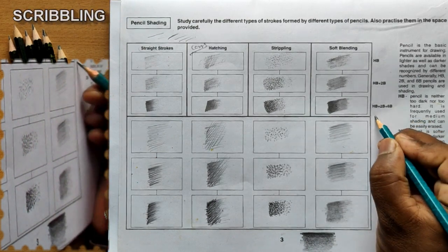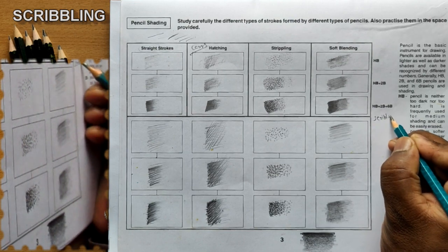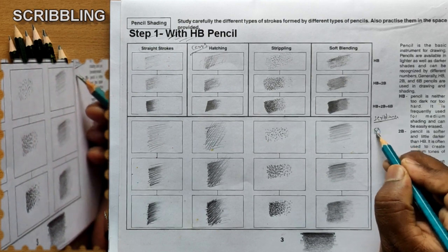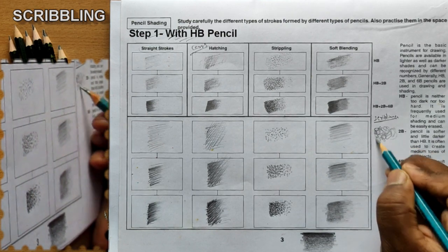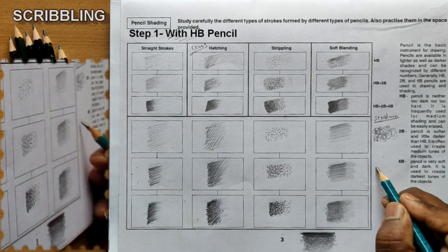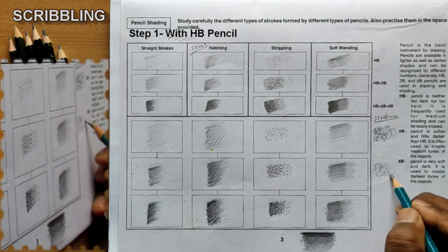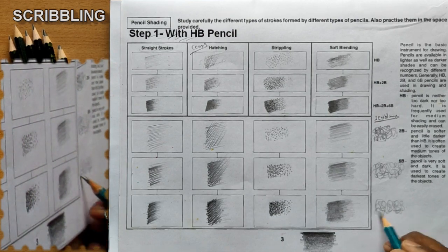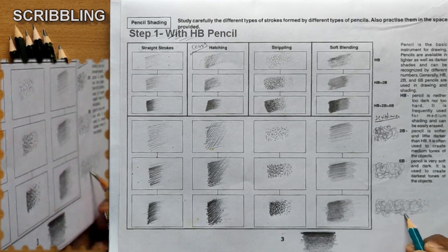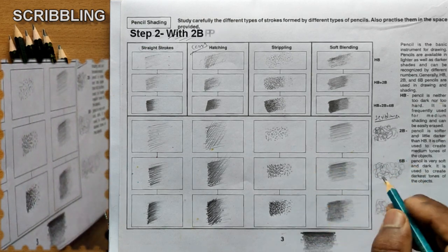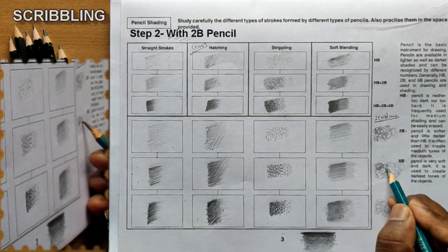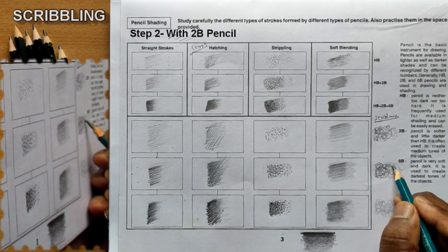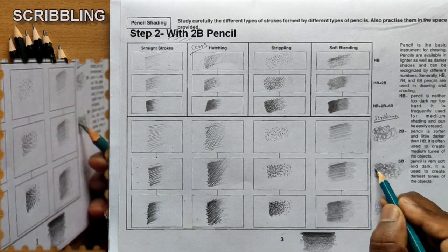Let us see one more method: scribbling. In scribbling, we form marks by moving the pencil in any direction. Use an HB pencil for the first step. For the second step, take a 2B pencil, overlap and increase the pressure level, and reduce the gap between the lines. You can move your pencil in any direction.